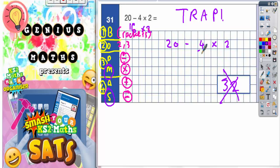Cross out 4 times 2, work that out. That's 8. Then anything else that you've not done yet, drop it down. So drop down the 20, just drop it down.